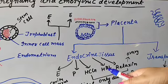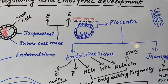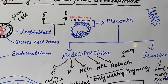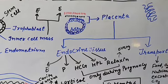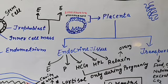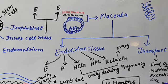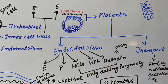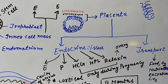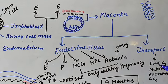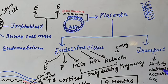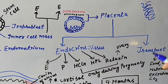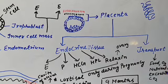The placenta works like an endocrine tissue and also helps in the transport of food, oxygen, and nutrients. The embryo can also remove its waste products like carbon dioxide through the placenta. So the embryo gets glucose, oxygen, and other nutrients and removes its waste through the placenta.